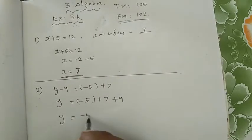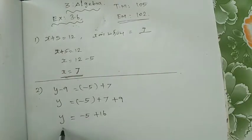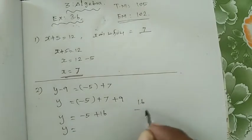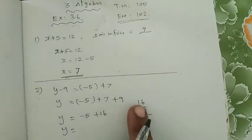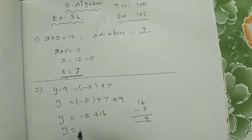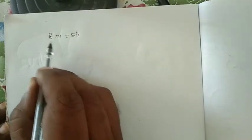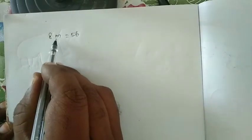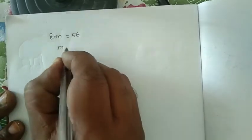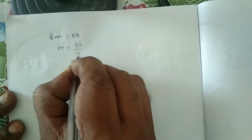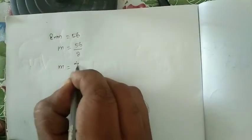For y is equal to 16 minus 5, subtract from 9. The result is 8 is equal to 56 by 8. So m is equal to 56 by 8.